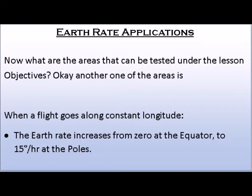Another area of earth rate applications is when a flight goes along a constant longitude. In this case, the earth rate increases from zero at the equator to 15 degrees per hour at the poles.